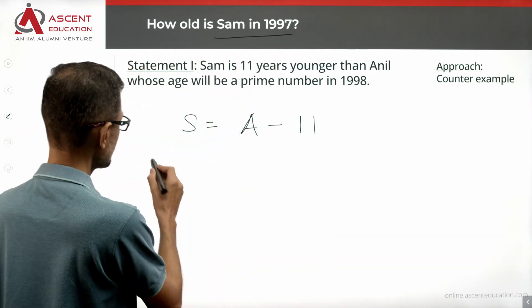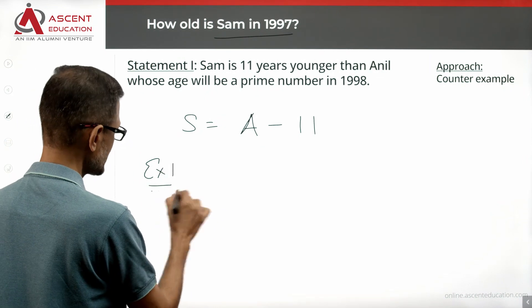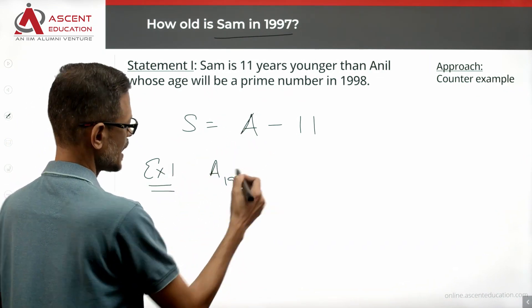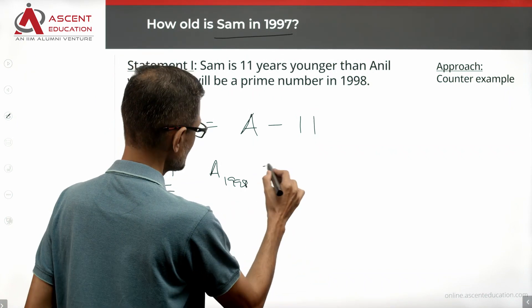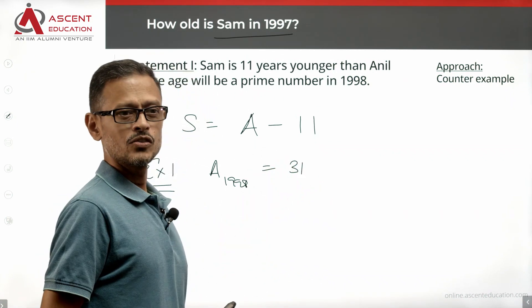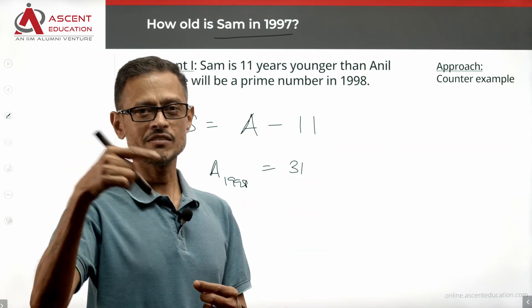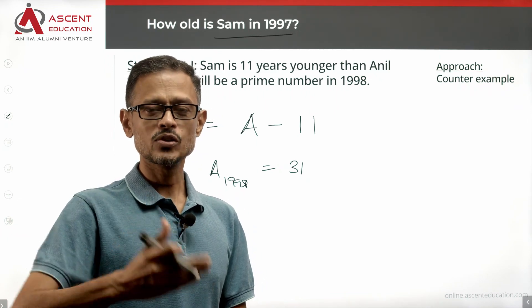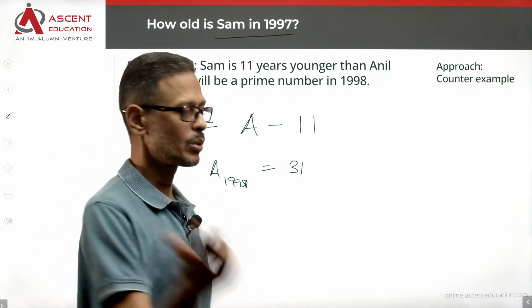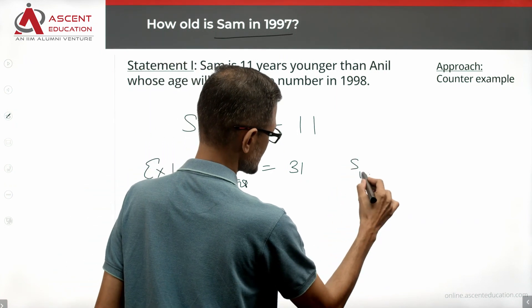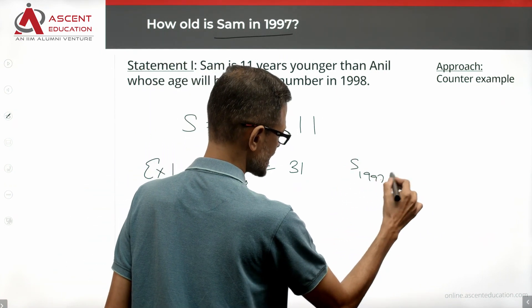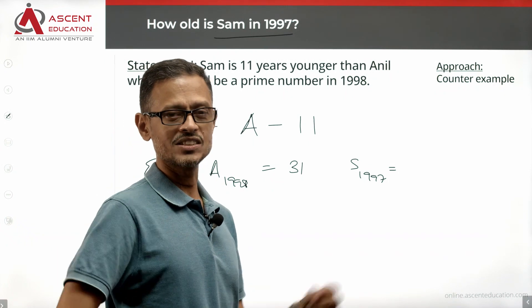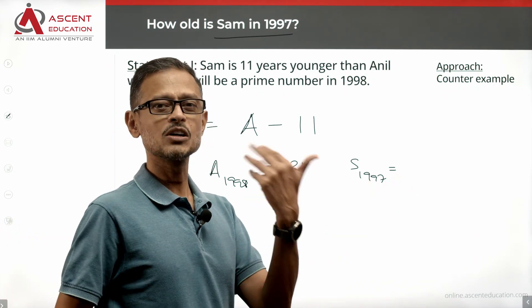Looking at Example 1: We are looking at Anil's age in 1998 — that is one prime number, say 31. So Anil's age in 1997 would be 30, and Sam's age in 1997 would be 10 — which is 11 less than Anil's age in 1997. Anil's age in 1998 can yield more than one answer for Sam.